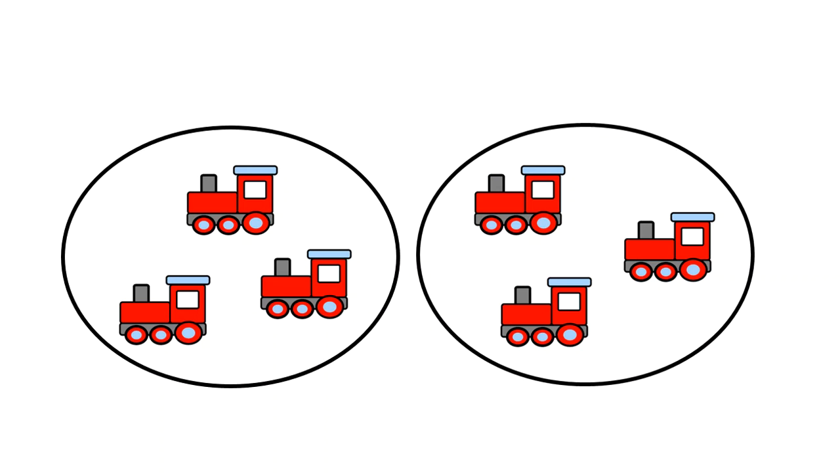Examine these two groups. On the left there are three train cars and on the right there are three train cars. These are equal groups.